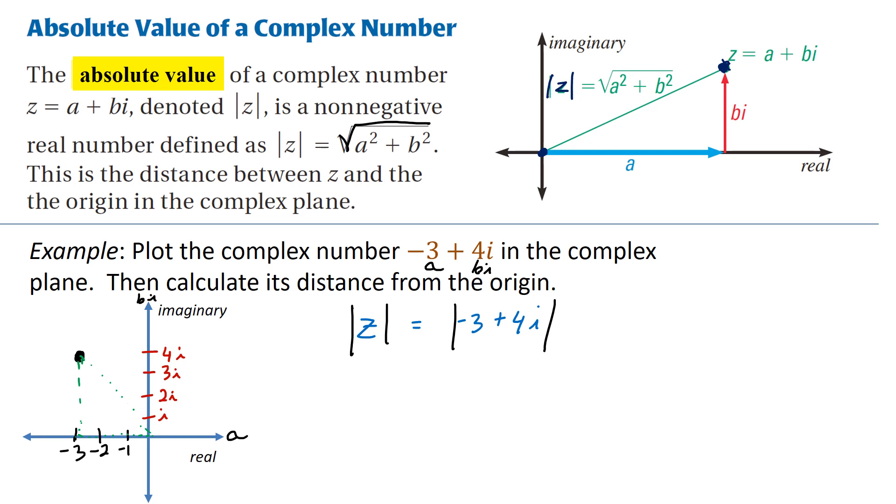Well, from our number, a is negative 3, and the b term is the coefficient of the imaginary part, it's 4. So we're going to take the square root of negative 3 squared plus 4 squared. That gives us the square root of 9 plus 16, which is 25. And when we square root that, we get 5. And it makes sense because if you remember your Pythagorean triplets, if this is 3 and this is 4, this would be 5.